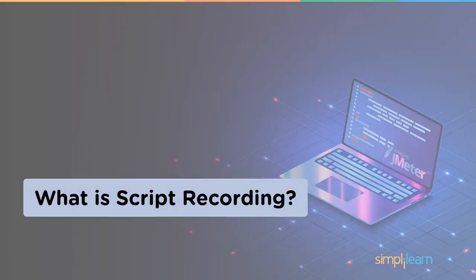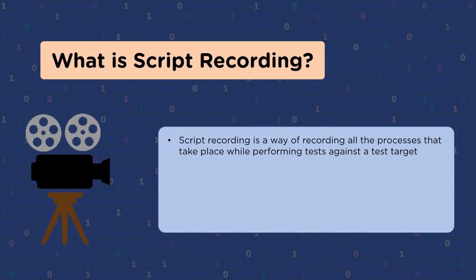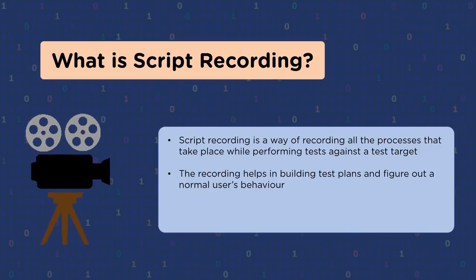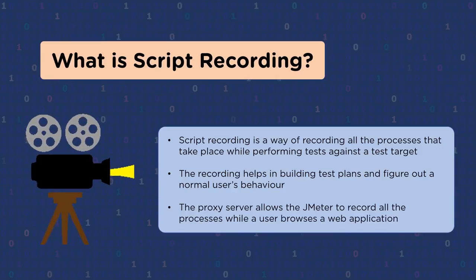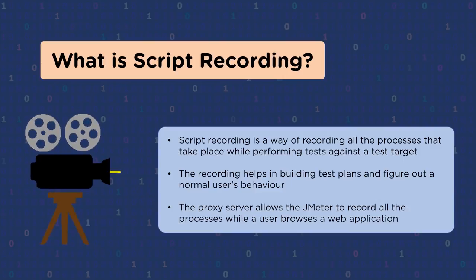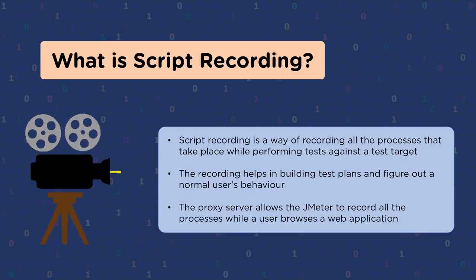Script recording in JMeter helps testers record and run their activity against test targets. It is a type of automated testing designed for multiple users. The proxy server allows JMeter to watch and record user activity while browsing web applications with a normal web browser. The proxy is a component present between you and the remote server. When JMeter acts like a proxy and records browser interactions, that is script recording — one of the advanced ways to figure out and eliminate the complexity of browser interactions in software testing.